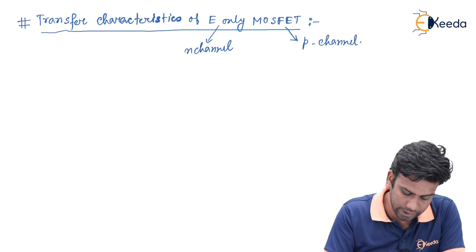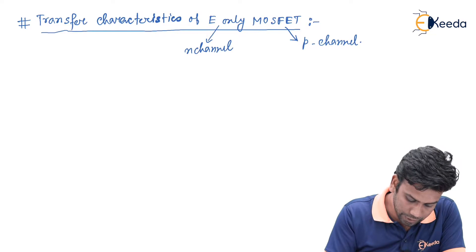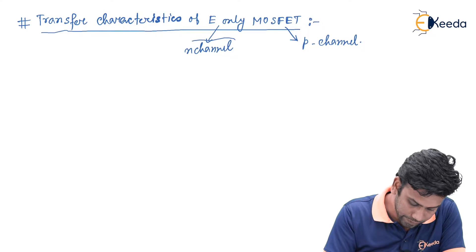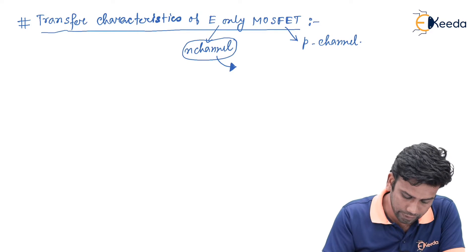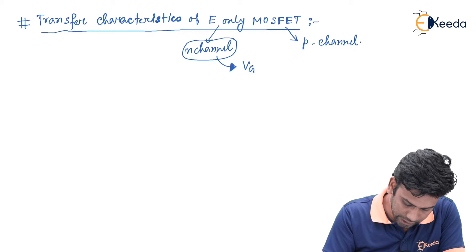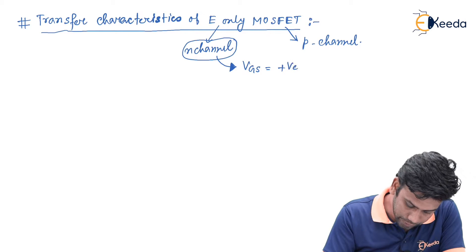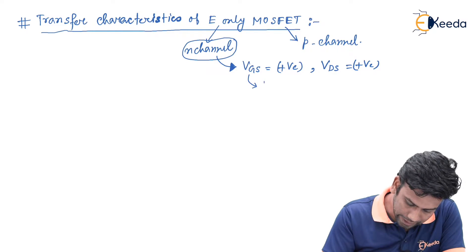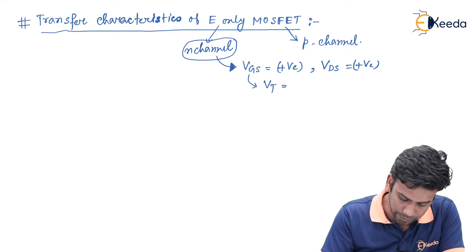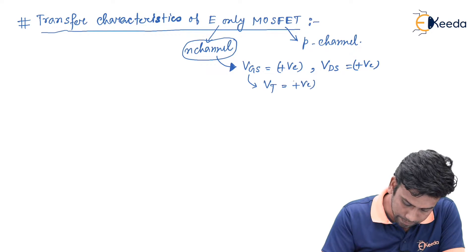Let us first see what will be the transfer characteristics of N-channel E-only MOSFET. As we know, for E-only MOSFET the MOSFET will give the drain current only for Vgs equal to positive voltage and Vds equal to positive voltage. That means the threshold voltage Vt will be positive.